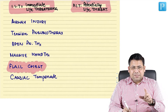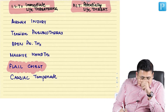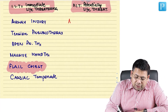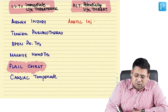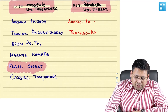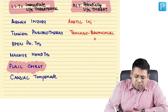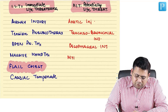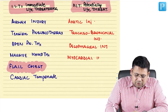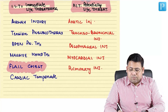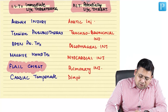Flail chest is important and controversial — ATLS considers flail chest as part of PLT, not ILT. The Hidden Six (PLT) includes: aortic injury, tracheobronchial injury, esophageal injury, myocardial injury, pulmonary injury, and diaphragm injury.